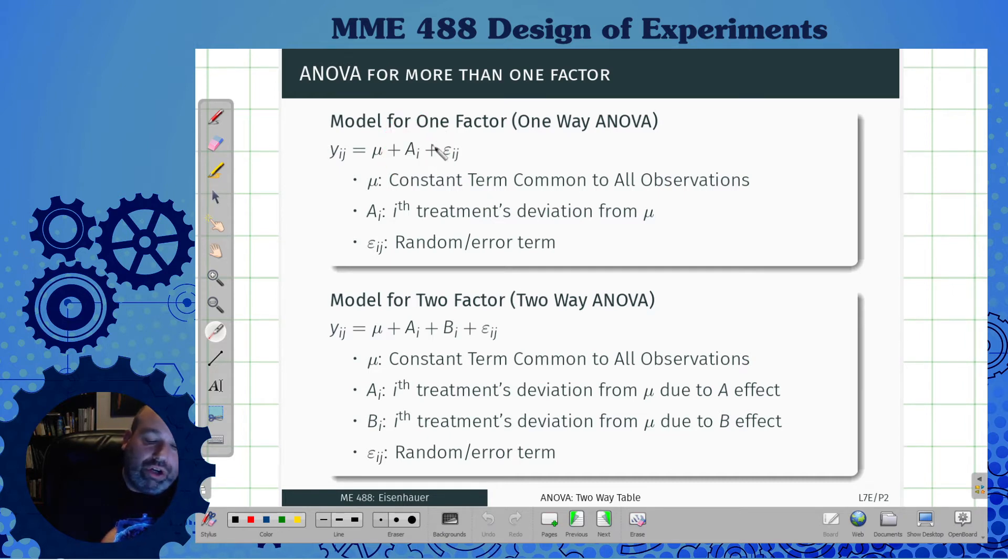In a two-factor ANOVA, same idea, except for that you have something due to the A effect treatments, and then something due to the B effect treatments. And so that's the one thing that you really want to pay attention to, is that we actually have two different effects going on here at the same time. And so we want to make sure that we can split those up and understand what's going on there.